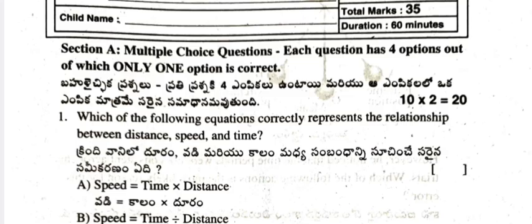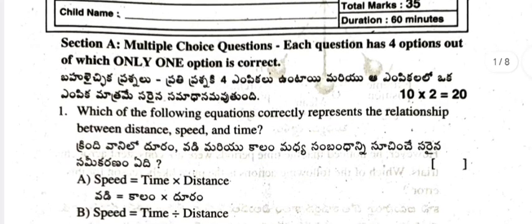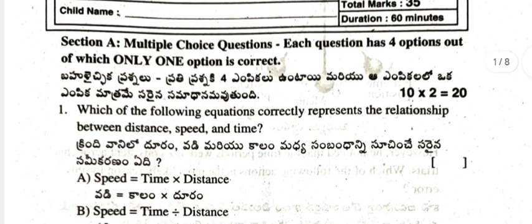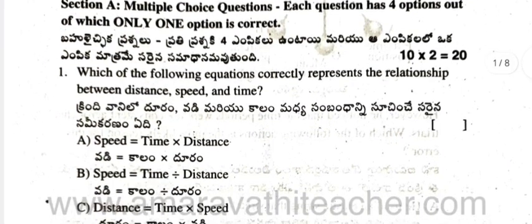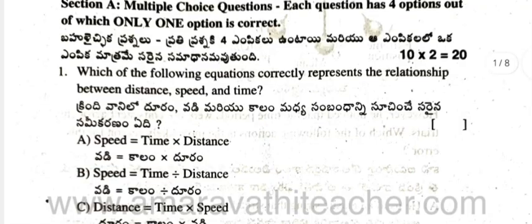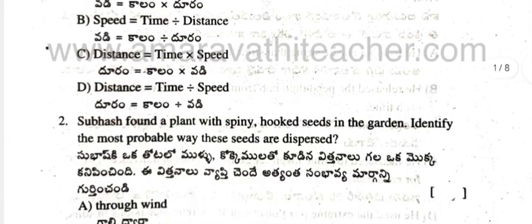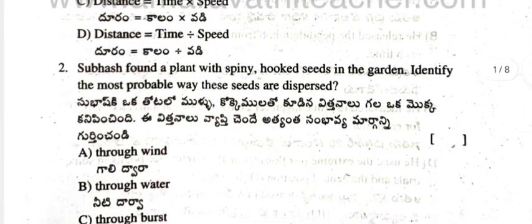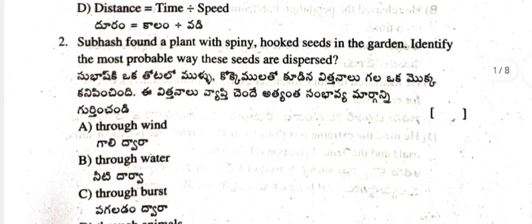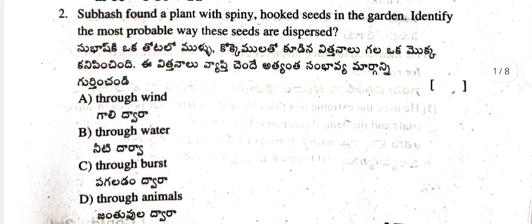Question 1: Which of the following equations correctly represents the relationship between distance, speed, and time? Question 2: Subhaj found a plant with spiny hooked seeds in the garden — identify the most probable way these seeds are dispersed.